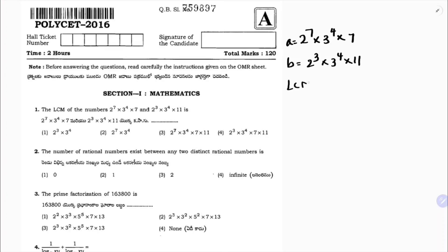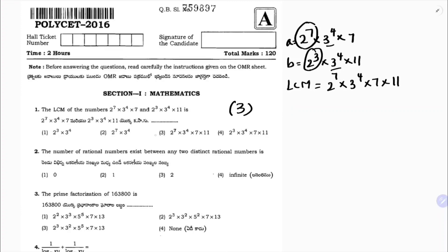For LCM, we write all the numbers, but when you have something common like 2 power 7 and 2 power 3, you take the highest one, which is 2 power 7. Then 3 power 4, and we need to write 7 and 11. So LCM is 2 power 7 into 3 power 4 into 7 into 11. The correct option is 3.